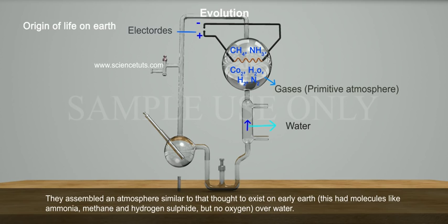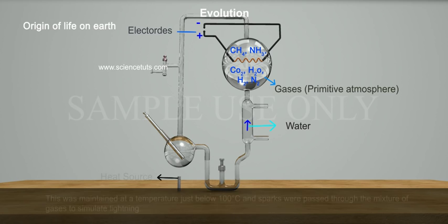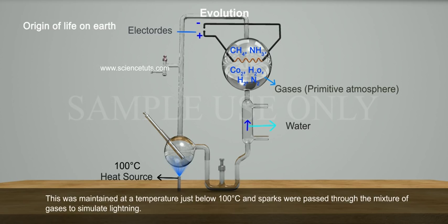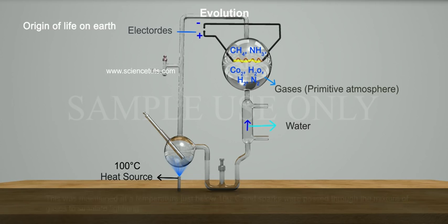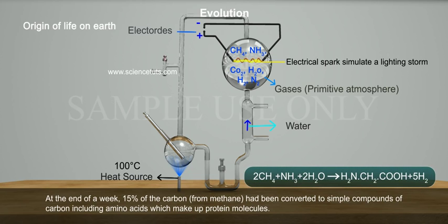They assembled an atmosphere similar to that thought to exist on early earth — with molecules like ammonia, methane, and hydrogen sulfide, but no oxygen, over water. This was maintained at a temperature just below 100 degrees centigrade, and sparks were passed through the mixture of gases to simulate lightning. At the end of a week, 15 percent of the carbon from methane had been converted to simple carbon compounds, including amino acids, which make up protein molecules.